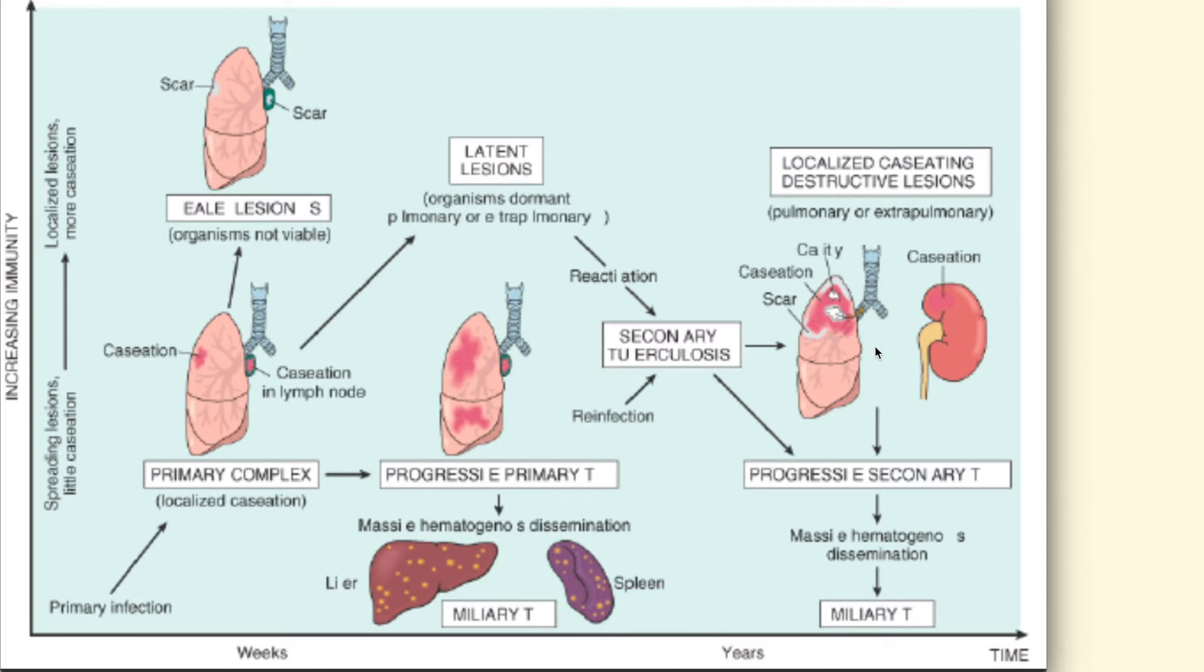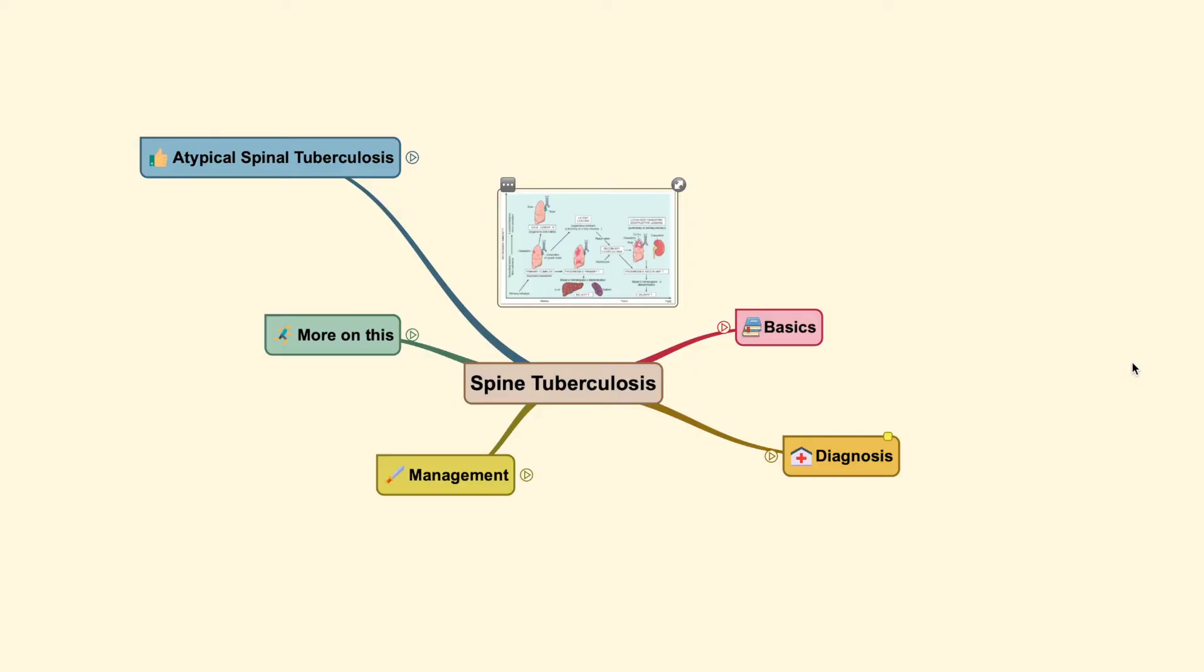Now, reinfection could also induce formation of secondary tuberculosis and it could develop into a localized caseating destructive lesion over at the lung here for vein caseation and scar, especially at the apex of the lung. But it could also progress into secondary tuberculosis as seen in some extrapulmonary site. Now, this is where the spine tuberculosis lies over at this particular region of pathophysiologic process.